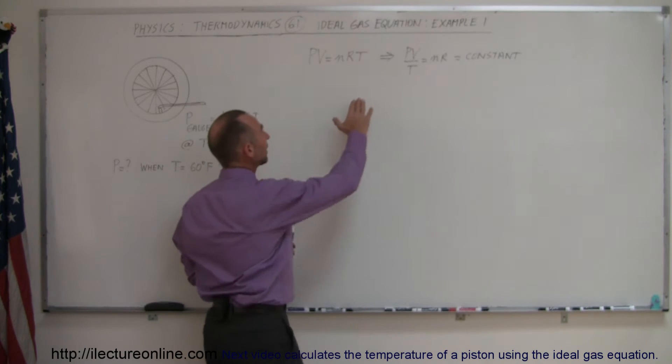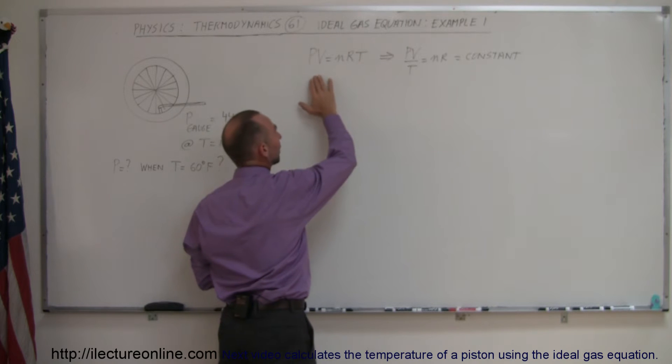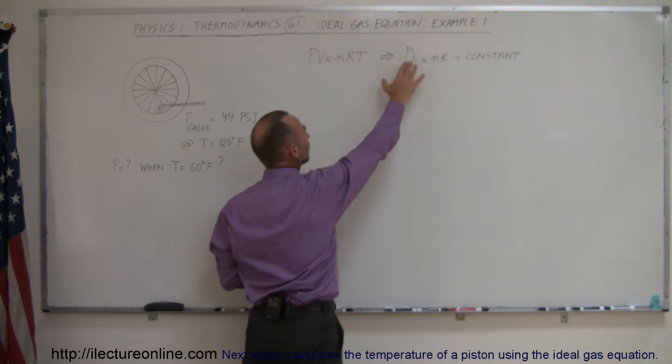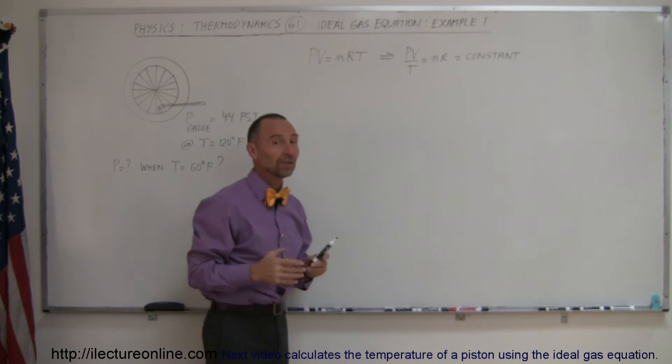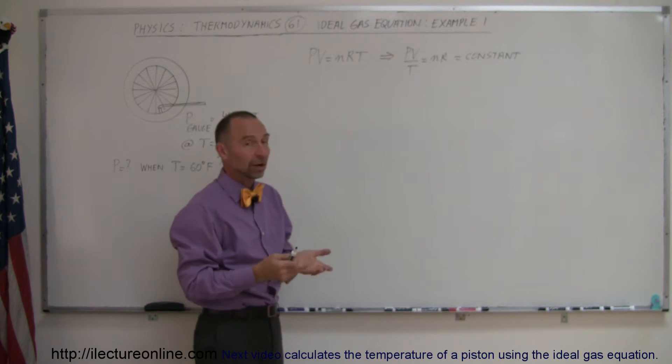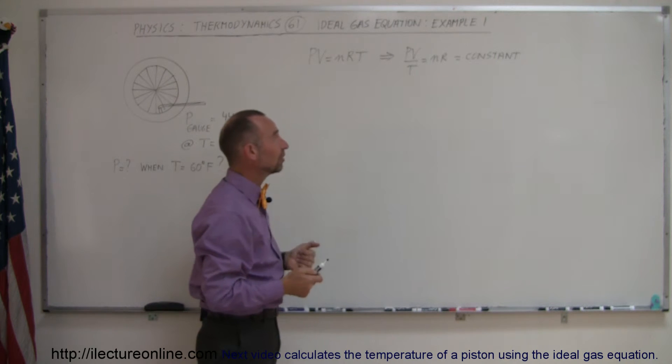If we take our temperature and move it down to the denominator, on the left side of the equation we have PV over T equals nR. Realizing that N is constant and R is constant, PV over T is equal to a constant.